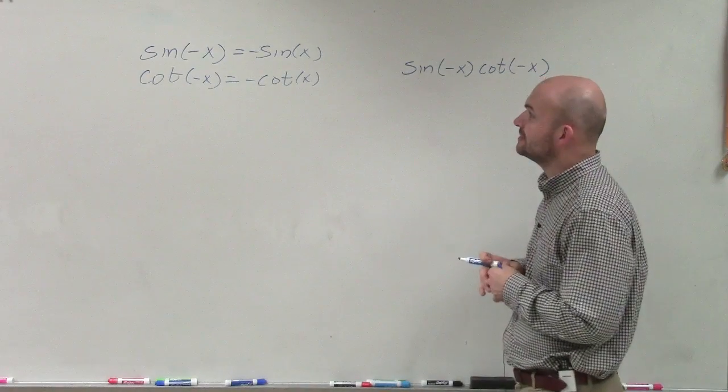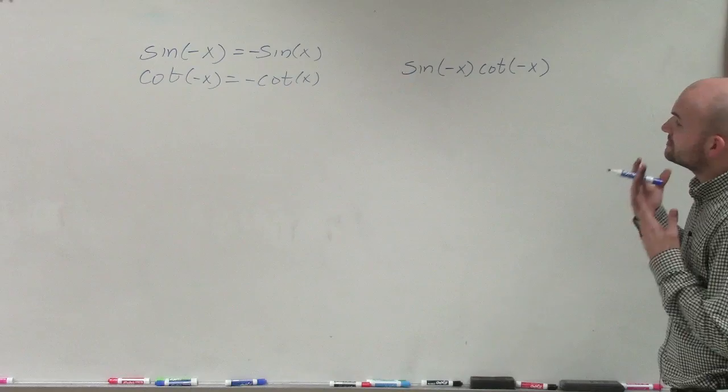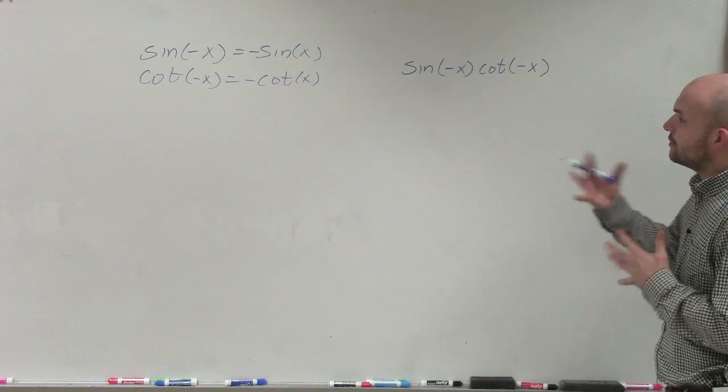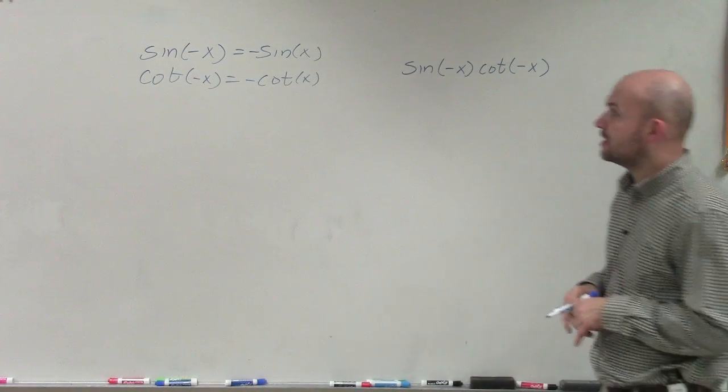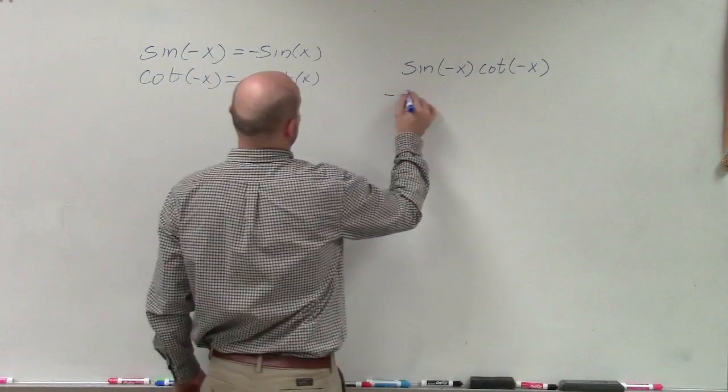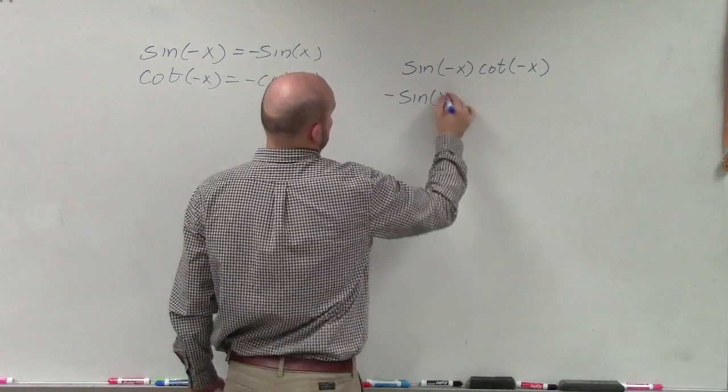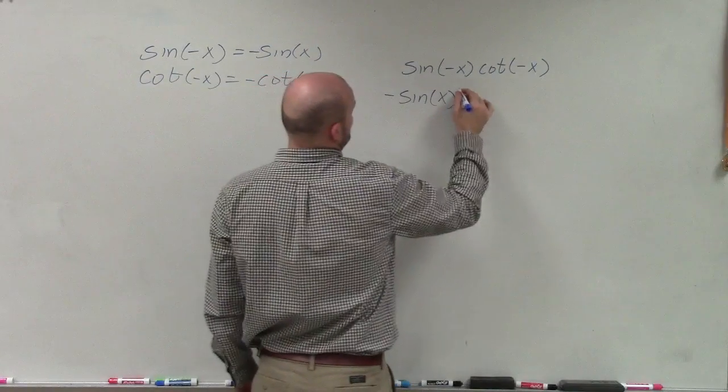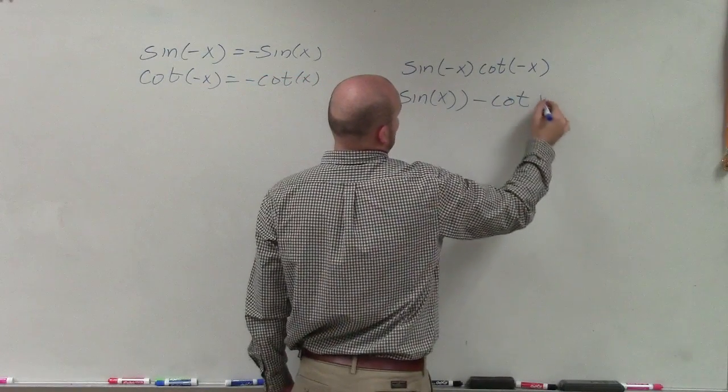So therefore, that's how they're going to work with that even identity. So now what we need to do is go ahead and replace them with what they're equal to. So here, I have negative sine of x times a negative cotangent of x.